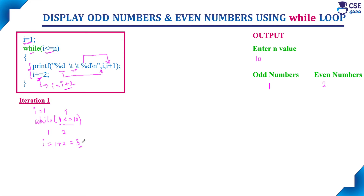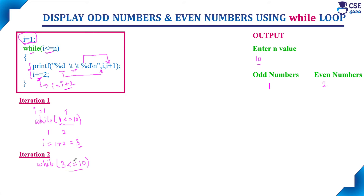With i value 3, consider the second iteration. Check the condition: while i is 3, is 3 less than or equal to n value 10? n value remains 10 — we are not updating n. Condition is true, 3 is less than 10. It will allow the body of the loop to execute once. Using the printf statement, it prints i value 3 and i plus 1 value 4 — output displays 3 and 4. Then update i: i equals 3 plus 2, so i becomes 5.